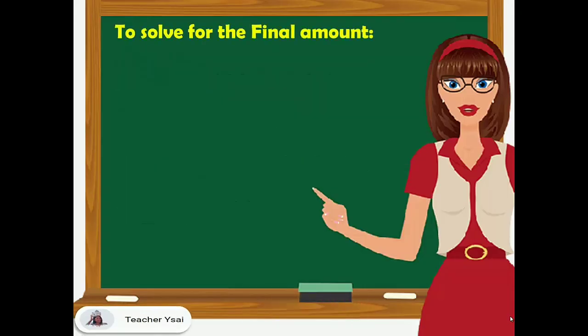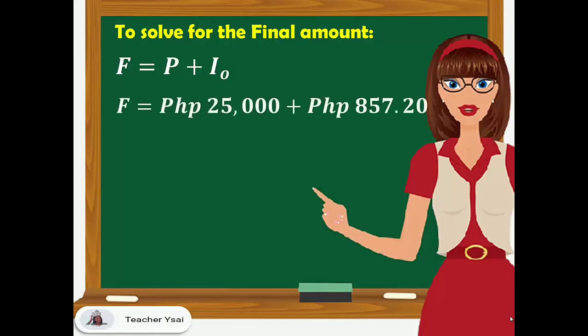The problem is also asking for the final amount. To solve for the final amount, we have the formula F equals P plus I sub O, where F stands for the final amount, P for the principal value, plus I sub O which stands for the ordinary interest. So we have 25,000 plus 857 pesos and 20 centavos, giving us a final amount equal to 25,857 pesos and 20 centavos.